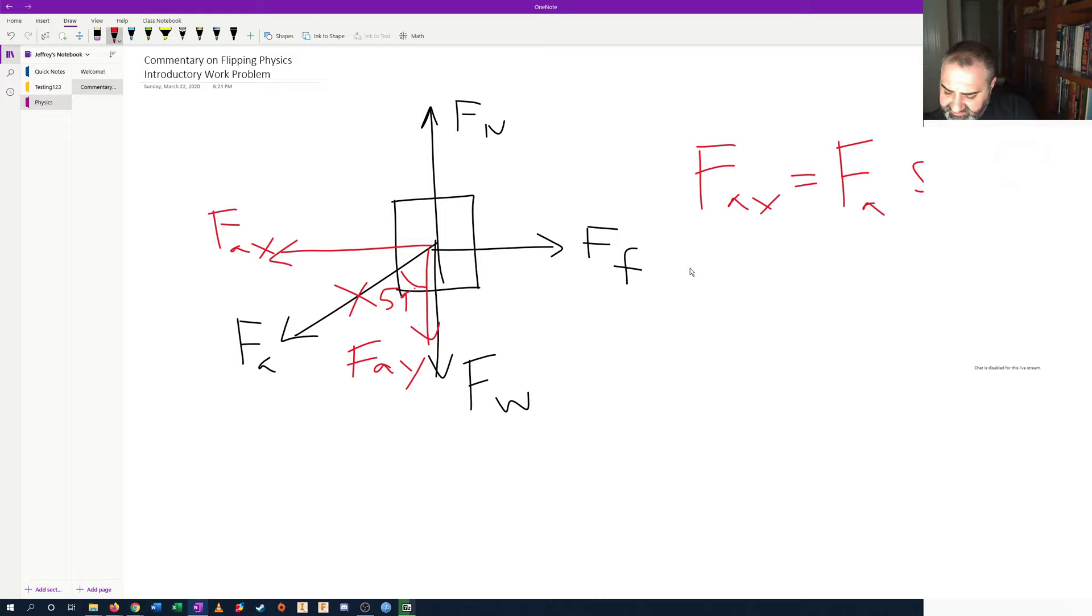Now, if you remember, I define work as force parallel times displacement. Well, that's f a x times the distance traveled, what they call d in the problem, I'll still leave it delta x.